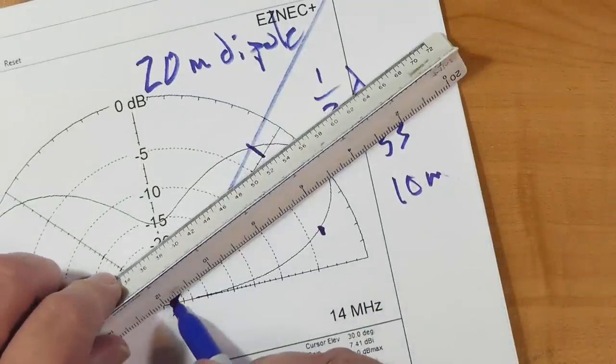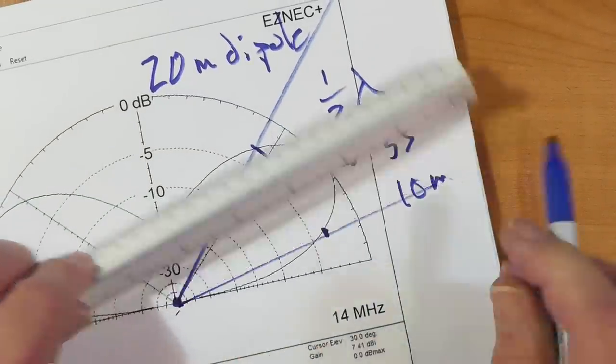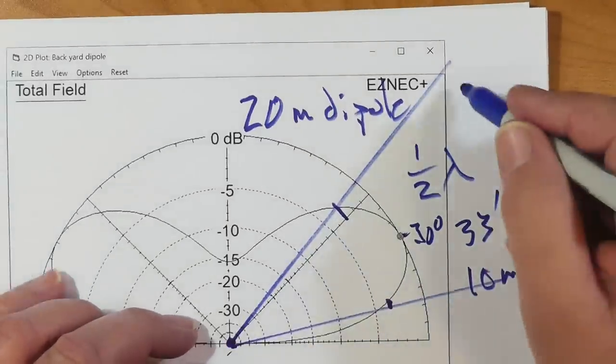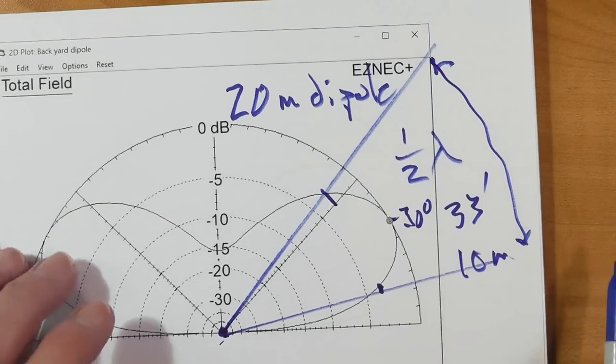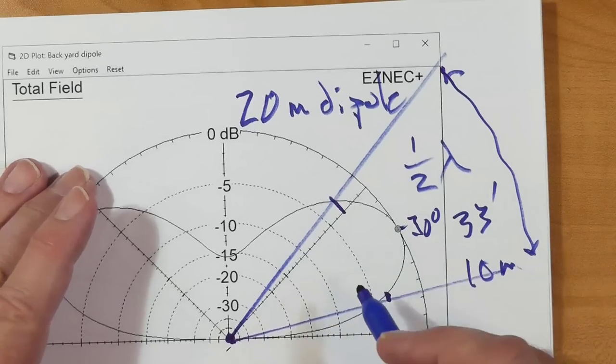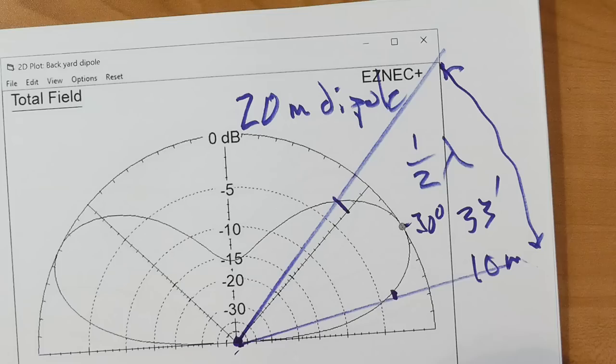We're going to go from here to here, and from here to here. You've got one lobe. This is the beam width right here. It's pretty broad, and you're going to put all of your power into it.